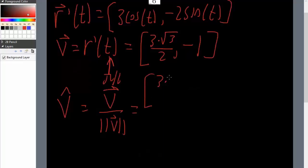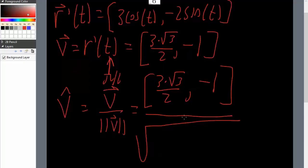And what we're gonna get here is 3 times square root of 3 divided by 2, comma negative 1, and we gotta get the magnitude of v which will be this term squared plus negative 1 squared.